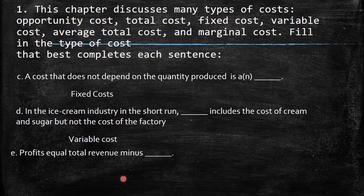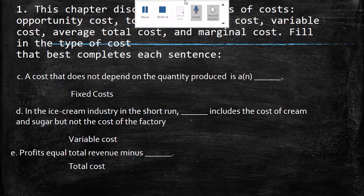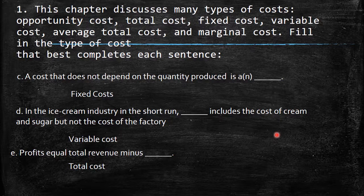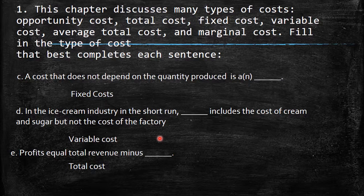The last part of question one: profits equal total revenue minus — profits are equal to price times quantity minus total cost, where total cost is fixed cost plus variable cost.